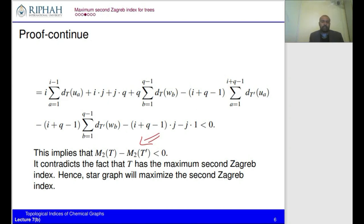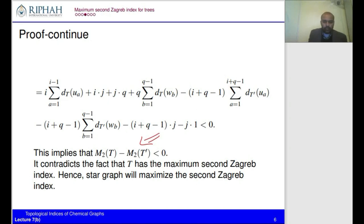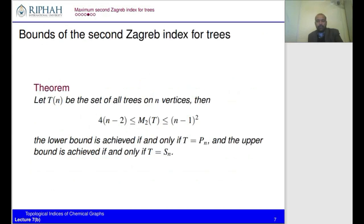This was the technique you can use to find extremal values for classes of graphs. There are many other techniques, but the main approach here is to transform the graph and compare. This establishes the upper bound on the second Zagreb index.